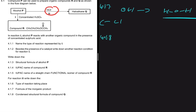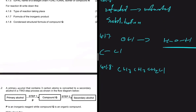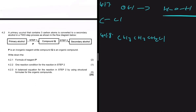For 4.1.8, write down the condensed structural formula of compound P, which is a haloalkane. We replaced OH with Cl, so we have CH3CH2CH2CH2Cl. If we write the condensed structural formula for the alcohol we would have OH at the end, but since we substituted it with Cl, we have Cl at the end.